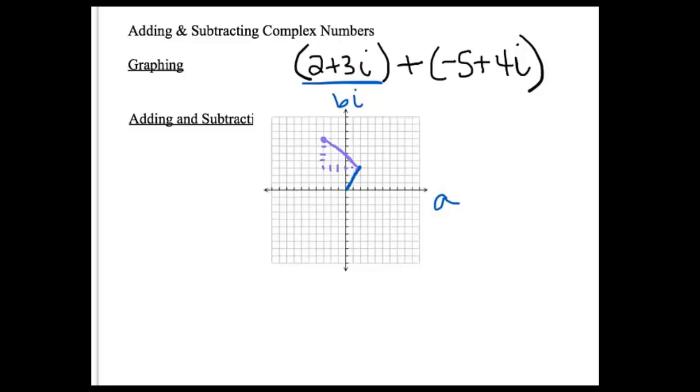So the question is, what's the answer? The answer is going to be the complex number from the origin here. So that is left 3 and up 7. So this answer here is negative 3 plus 7i.